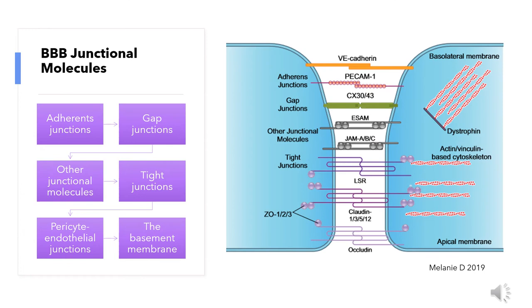Junctional molecules maintain the endothelial tight structural lining. Adherence junctions are situated close to the basolateral membrane and consist of vascular endothelial cadherin and platelet endothelial cell adhesion molecule 1. Then we have tight junctions such as claudin-5, on which we will mainly focus in this presentation. Claudin-5, together with occludins and LSR, limits the paracellular diffusion of solutes and ions across the endothelial monolayer.